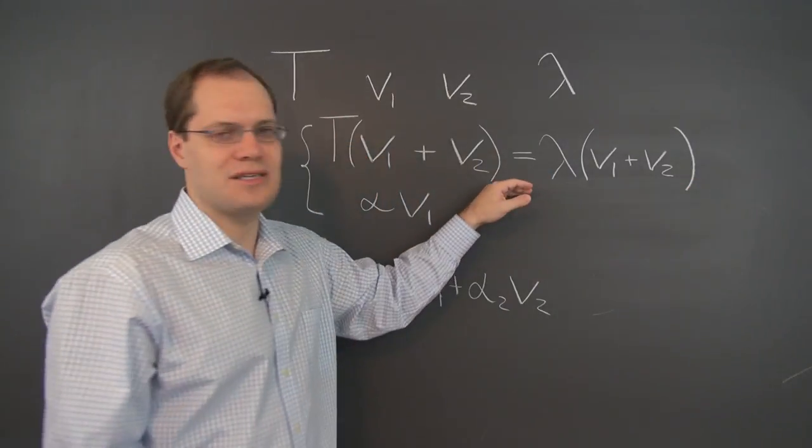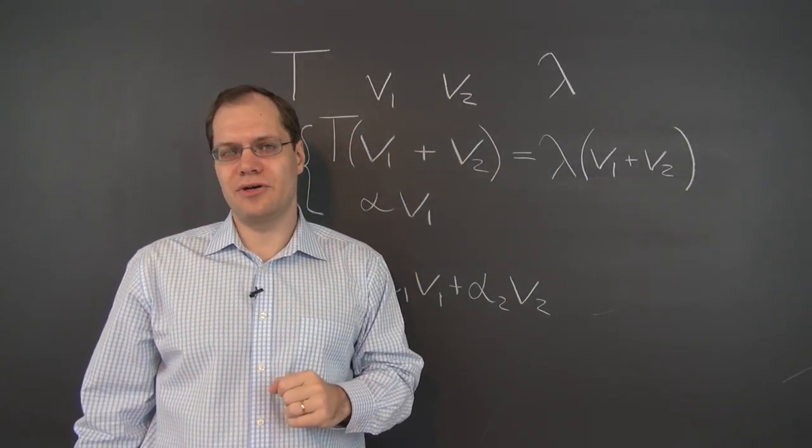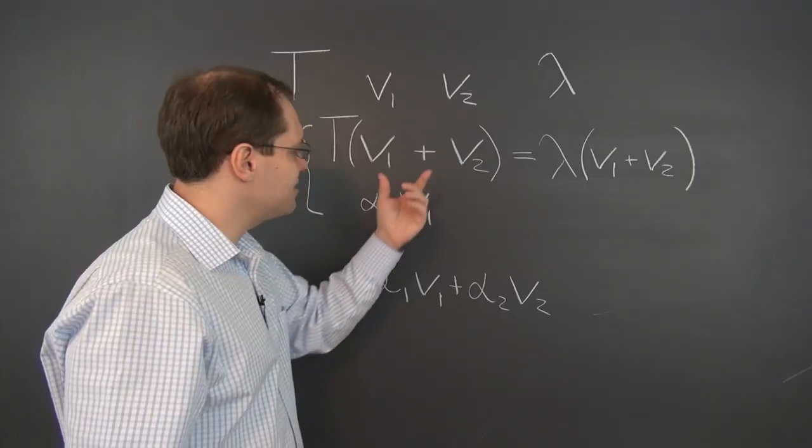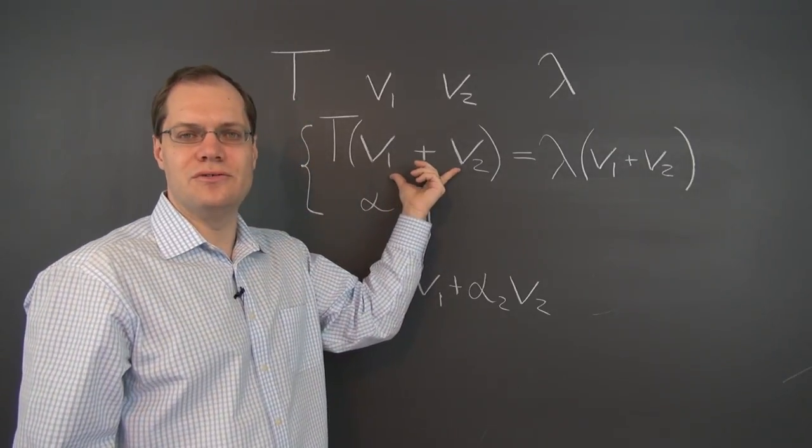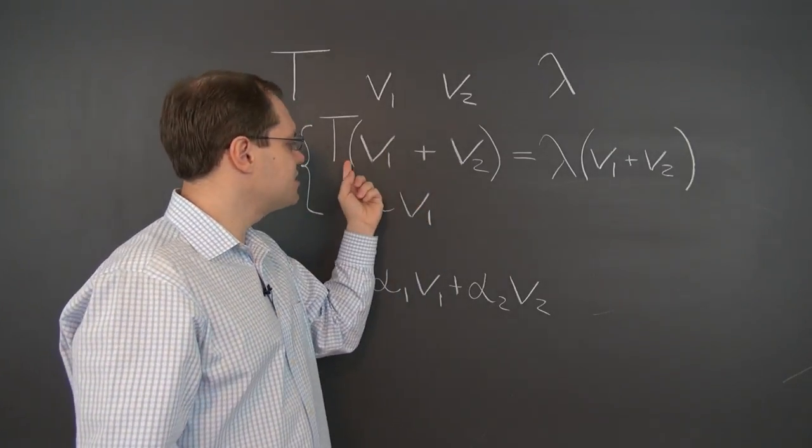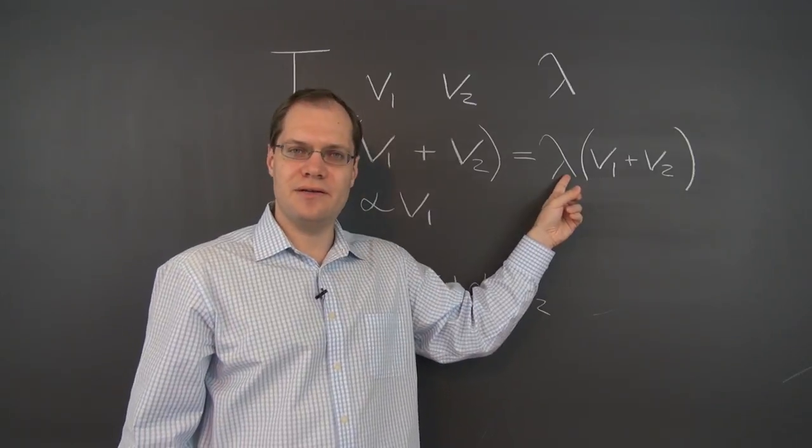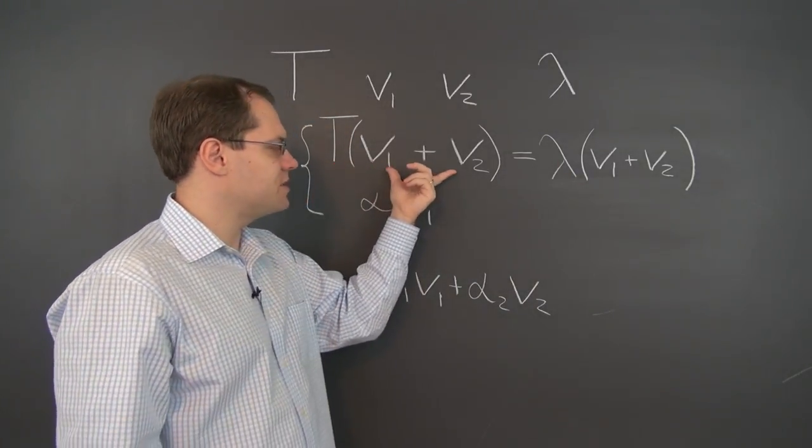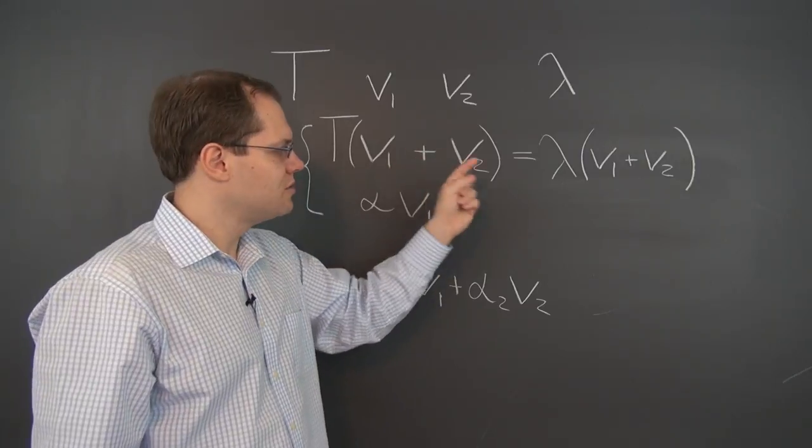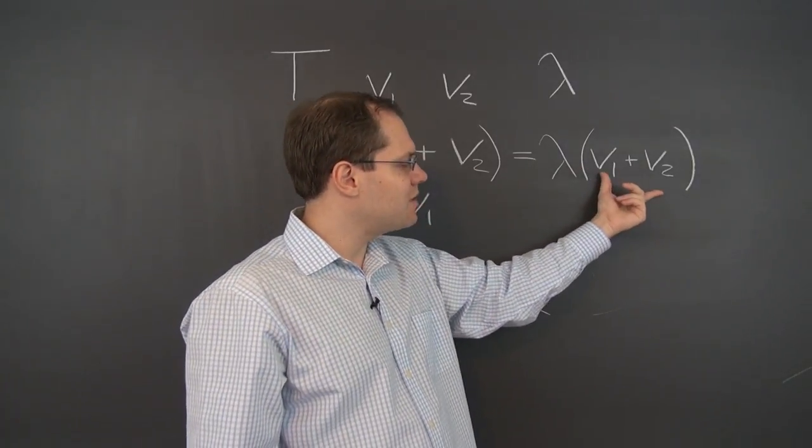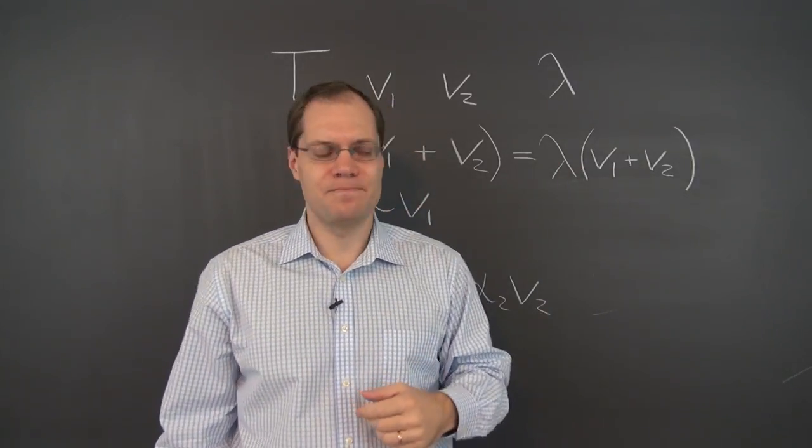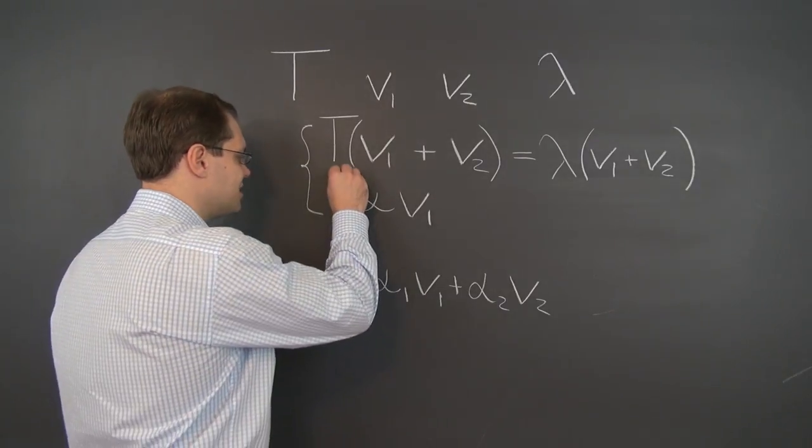And the expression that we see, the identity that we see on the board now, tells us precisely the fact that V1 plus V2 is an eigenvector of T corresponding to the eigenvalue lambda, because the effect of applying this linear transformation to V1 plus V2 is to multiply V1 plus V2 by lambda. So it passes the addition test.